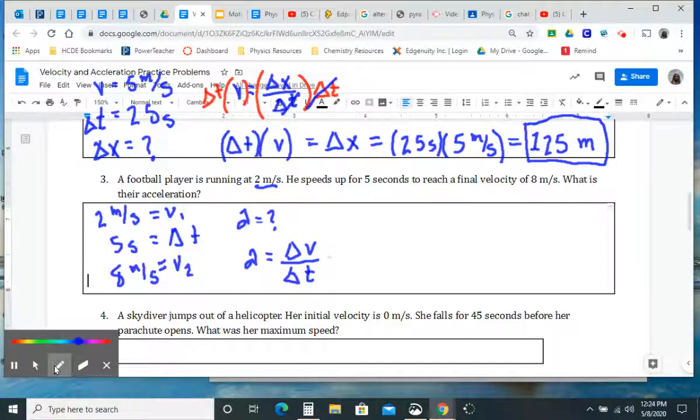Well, change in velocity, we said I'm just going to subtract the two. I'm going to take the second one, so 8 meters per second. And I'm going to subtract the first one, 2 meters per second. That's my change in velocity. My change in time, or how much time went by, that's a lot easier. I just gave it to you, 5 seconds.